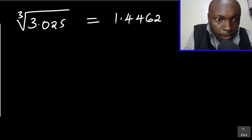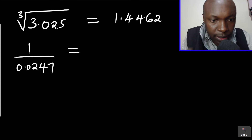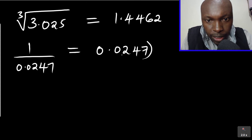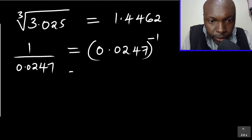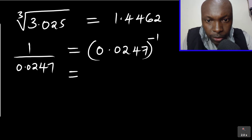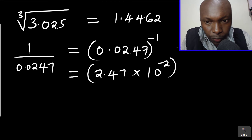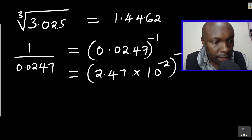The reciprocal is 1 over 0.0247, which is the same as raising 0.0247 to the power of negative 1. Looking at the tables of reciprocals, you notice they begin from 1.0 to 9.99, so you need to write this number in standard form: 2.47 multiplied by 10 to the power of negative 2. Don't forget, we're getting the inverse of that.